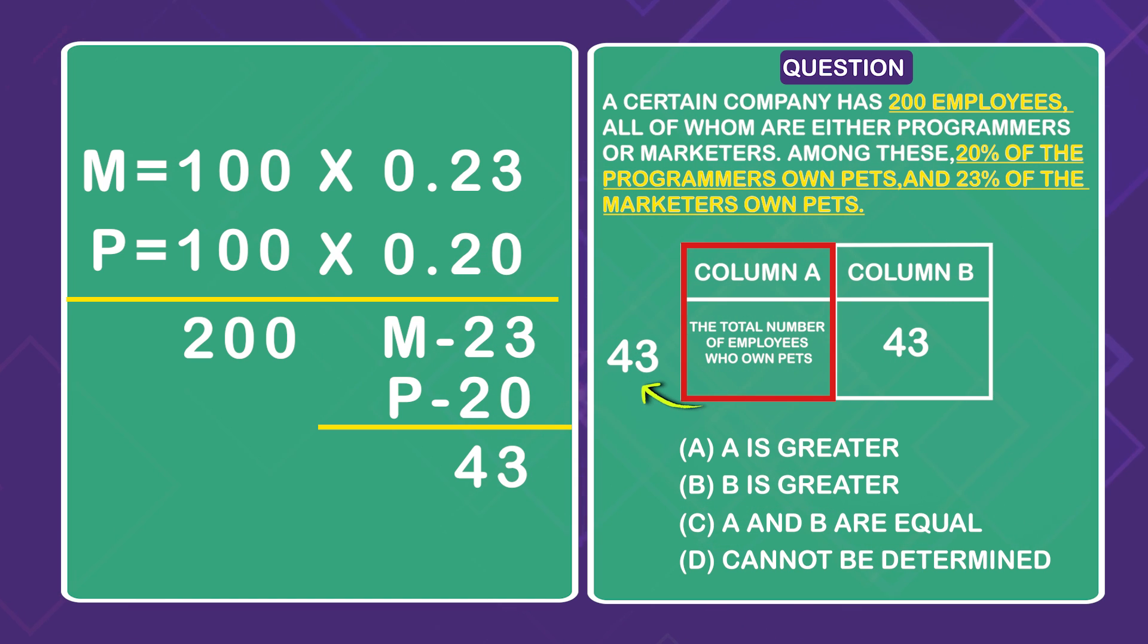And that is our value for column A. That means then that column A and column B are both equal to one another and C is the correct answer choice.